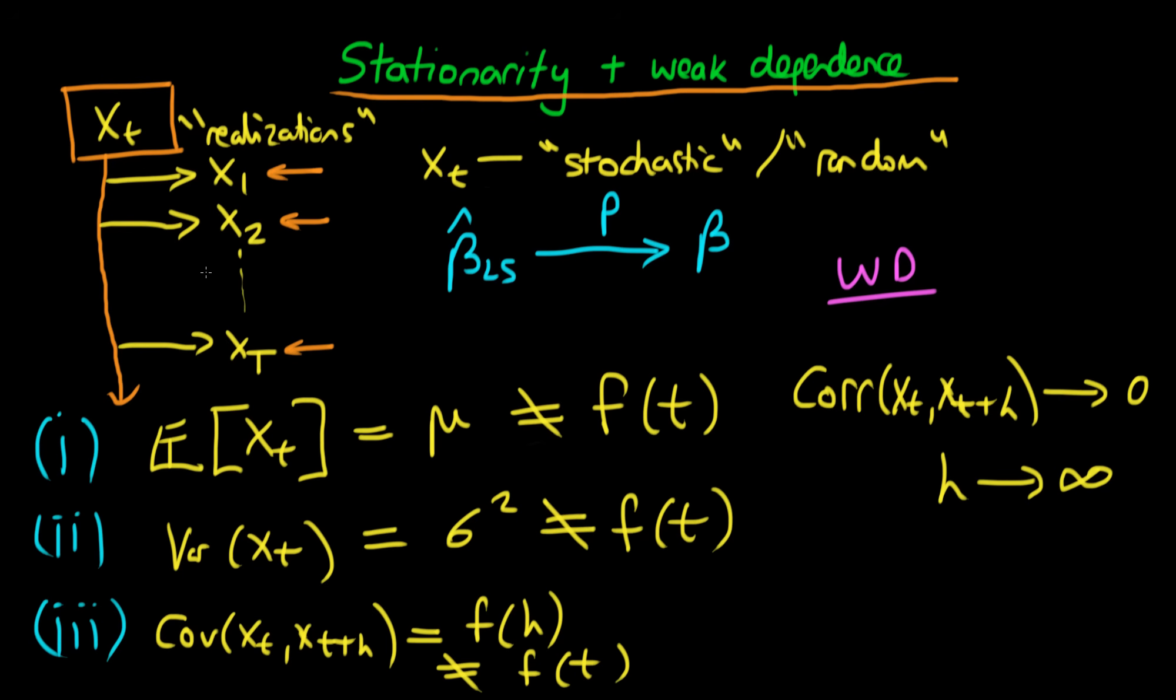What this means is the value of our process at time T must be less related to the value which our process outputted at time 1, X1, than X2 is with X1. Technically this covariance of X1 with some value of the process in the future has to decrease towards zero as the number of steps in the future goes to infinity.